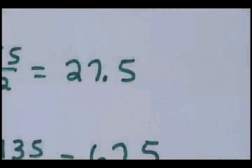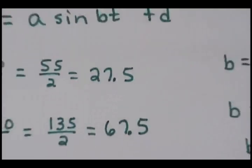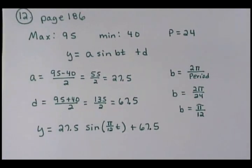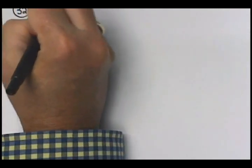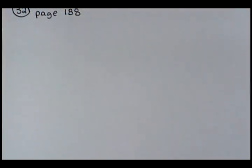Let's look at number 32 on page 188. On this temperature model problem, it says in Nairobi, Kenya, the daily temperature in January ranges from an average high of 77 degrees Fahrenheit to an average low of 58 degrees Fahrenheit. Find a sinusoidal equation model for the daily temperature, sketch the graph, and approximate the times when the temperature reaches a comfortable 72 degrees. Assume T equals zero corresponds to noon.